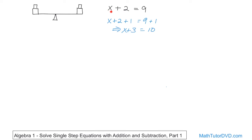What I'm impressing upon you is that all I did was add 1 to both sides. This new equation — x plus 3 equals 10 — looks very different from the original, but it has the same solution. x plus 2 equals 9 means x is 7. x plus 3 equals 10 also means x is 7. Even though they look different, they have exactly the same solution and represent the same thing.